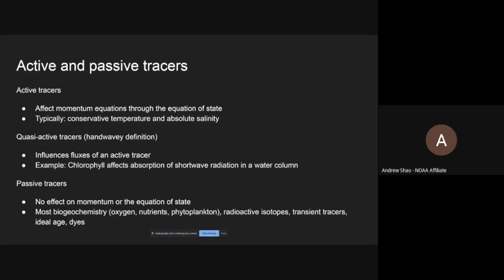Chlorophyll's presence and concentration does feed back into the momentum equations, not directly, but in another step by modifying heat fluxes and shortwave absorption. Then we have the third classic type: the purely passive tracers. These are things that in no way can affect any of the physics of the model. They just flow along and do whatever they do. They can be interdependent on each other and dependent on the active tracers, but they themselves do not actually change the flow at all. If something is more than one step removed from an active tracer, I just call that a purely passive tracer.